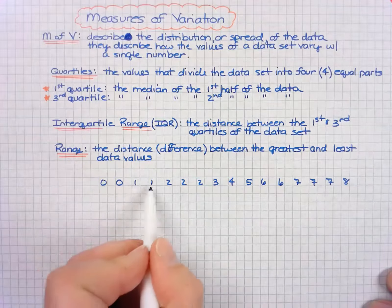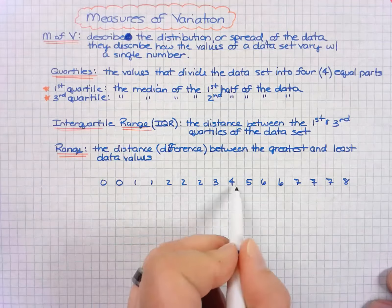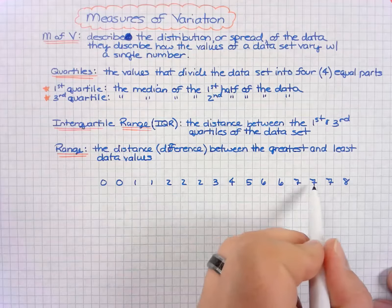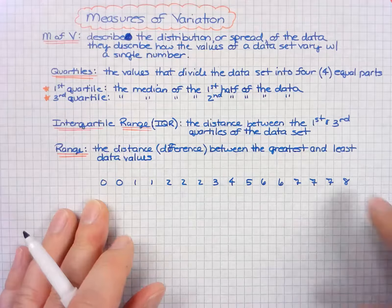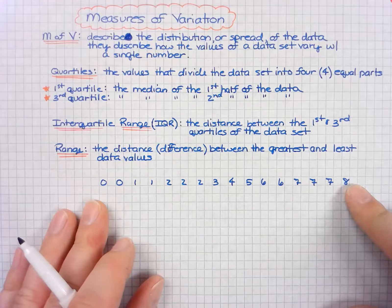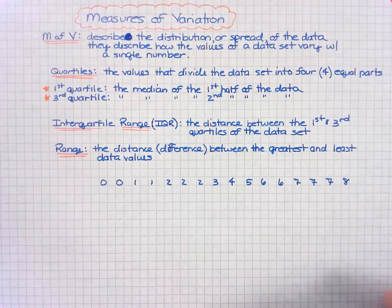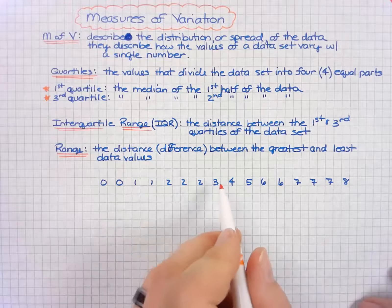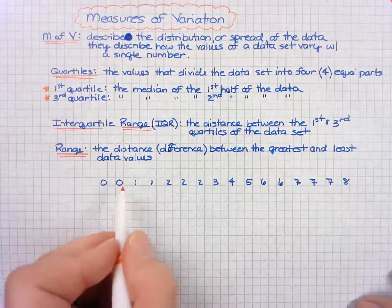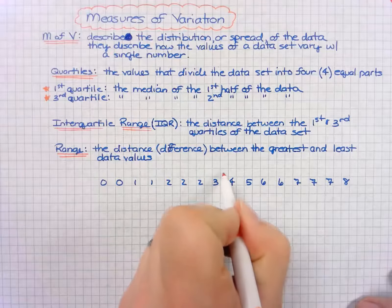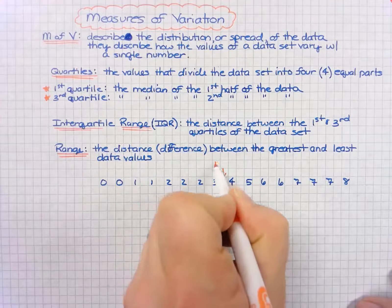Let's take a look. How many total numbers do we have here? We have 1, 2, 3, 4, 5, 6, 7, 8, 9, 10, 11, 12, 13, 14, 15, 16. So because there's an even number of data values, the median is in between the first eight and the final eight, and so that occurs right here. That's the median.